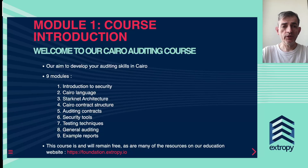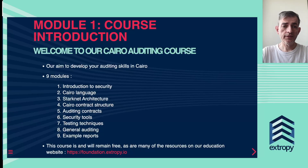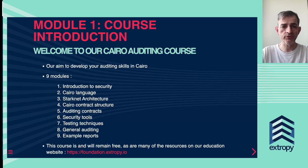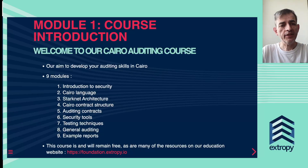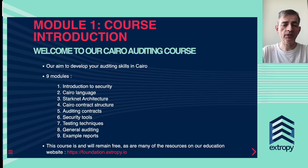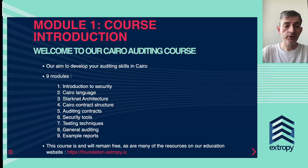In module six we look at some of the tools that may help you when you're auditing, and in module seven we look at the issue of testing and some techniques you may find useful. Then we take a step back in module eight and look at the auditing process more generally, and finish in module nine by looking at some example reports and particular issues that have been found and mentioned in earlier modules.